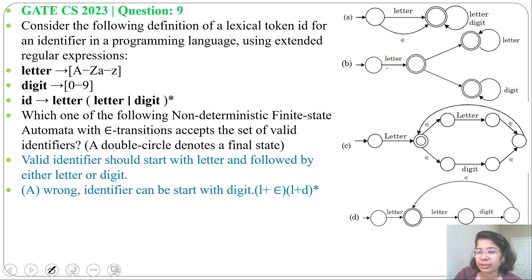Next option B. Letter then any combination of letter or any combination of digit. So regular expression will be letter, then letter any repetition plus digit any repetition. So we cannot generate letter, digit, then letter. After digit there is no way that we can generate letter.